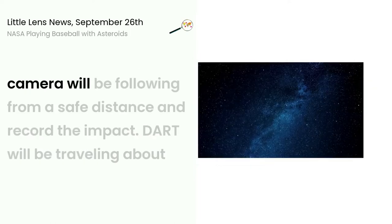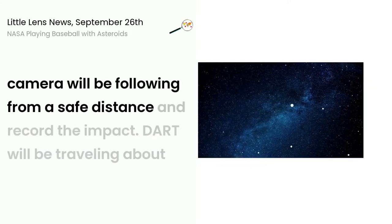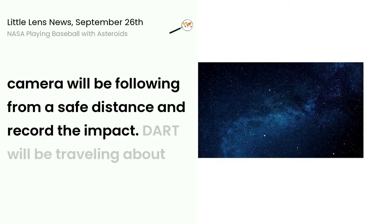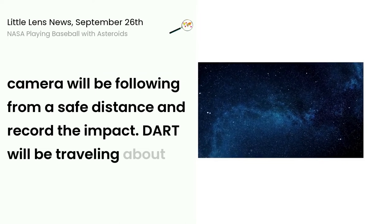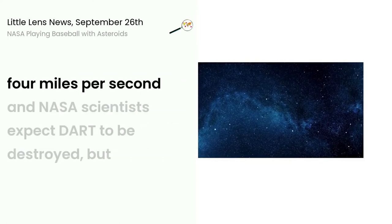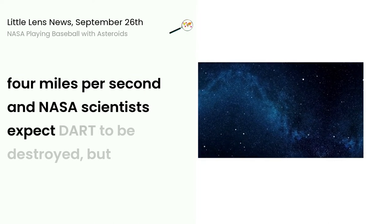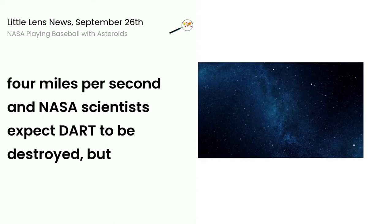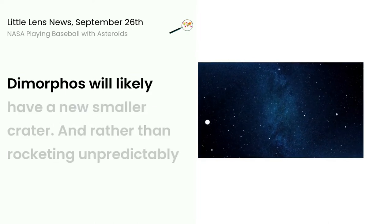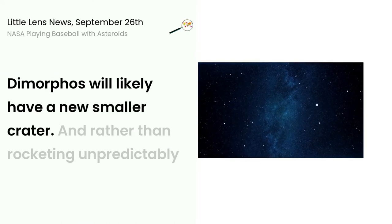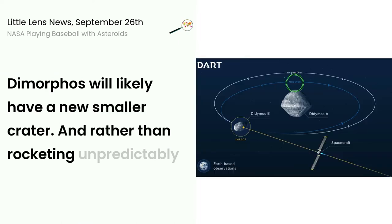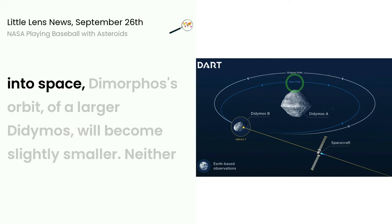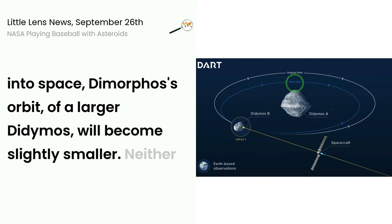Another camera will be following from a safe distance and record the impact. DART will be traveling about 4 miles per second, and NASA scientists expect DART to be destroyed. But Dimorphos will likely have a new smaller crater, and rather than rocketing unpredictably into space, Dimorphos's orbit of the larger Didymos will become slightly smaller.